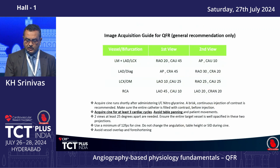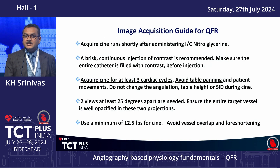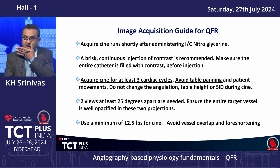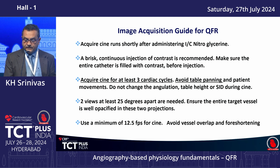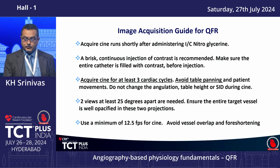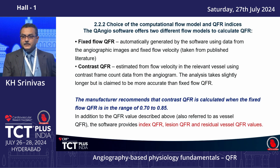Various angulations are needed to assess different coronary arteries and segments. A key lesson learned is that angiographic quality must be good. CINE runs should be acquired shortly after administering intracoronary nitroglycerin. A brisk, continuous injection of contrast is required, ensuring the catheter is entirely filled with contrast before injection. Acquire CINE for at least three cycles, avoid table movement, angle change, and table height shifts. At least two views 25 degrees apart are required, the entire target vessel must be well opacified, and a minimum of 12.5 frames per second must be used. Avoid vessel overlap and foreshortening.